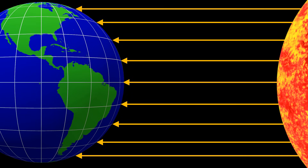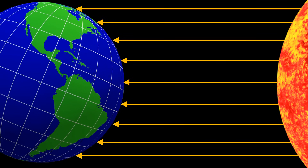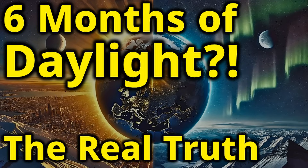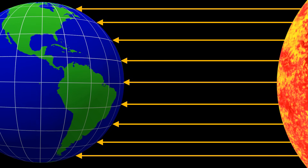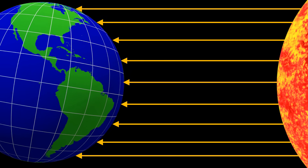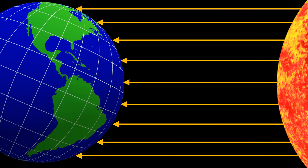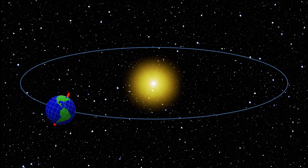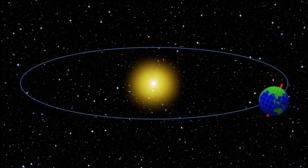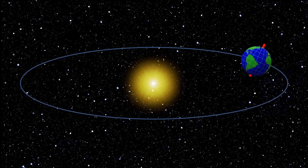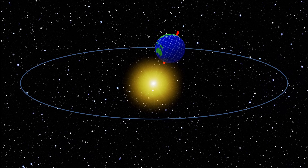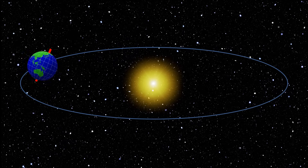One of the most important factors controlling Earth's climate is the tilt of the Earth's axis. Because of this tilt, the sun is not always directly overhead at the equator. As Earth spins on its axis, it also revolves around the sun. Depending on where Earth is along its orbit, the location where sunlight falls most directly — in other words, perpendicularly — keeps changing.